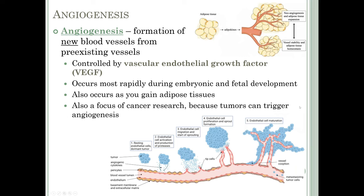Angiogenesis is also a focus of cancer research because tumors can trigger it. When a tumor reaches a certain stage, it secretes VEGF, causing blood vessels to grow toward the tumor. Once the tumor has a blood supply, it can grow much larger, and this is when the danger of metastasis begins, as tumor cells enter blood vessels and travel to other areas of the body.